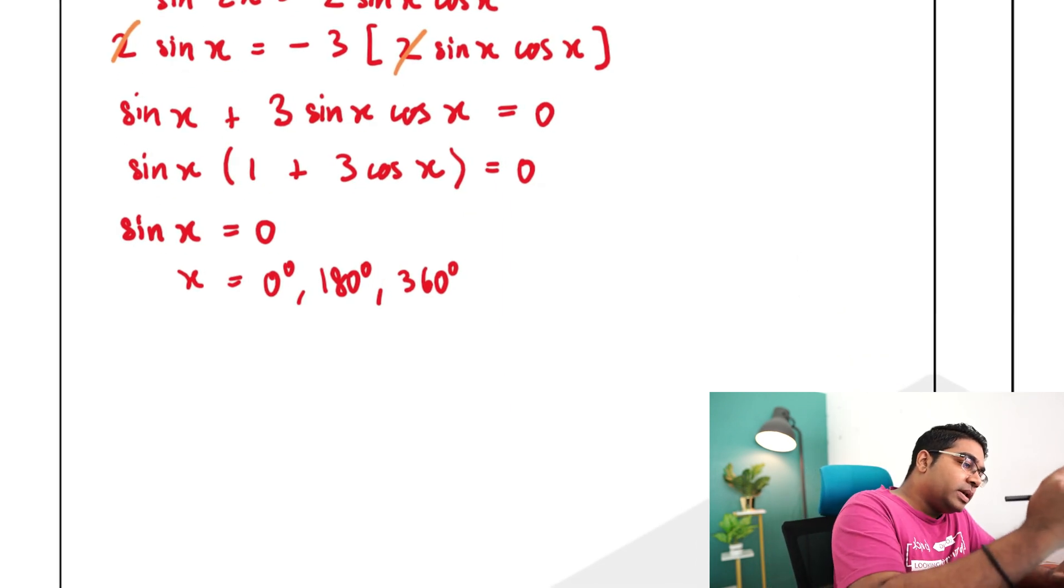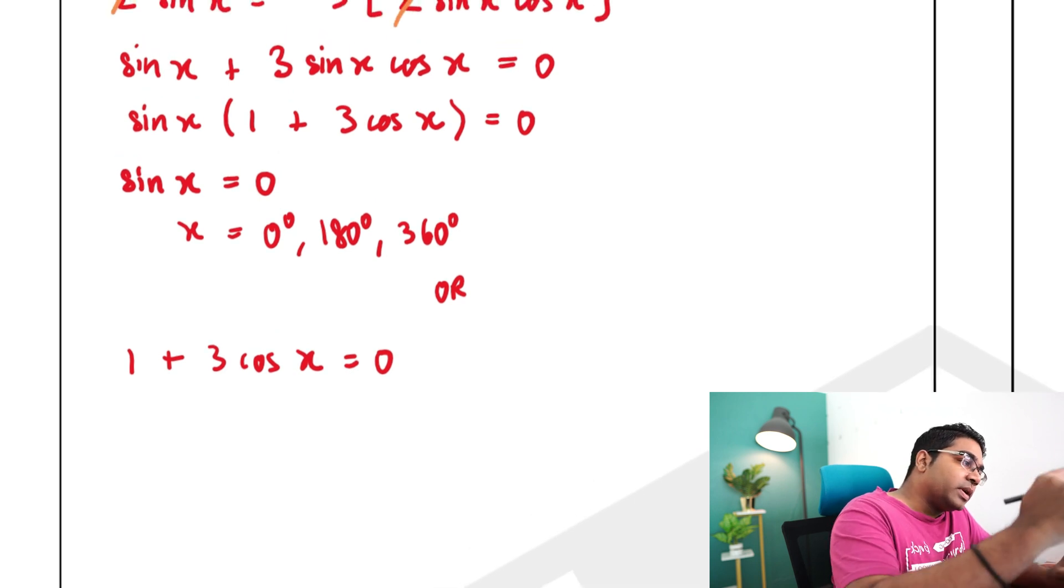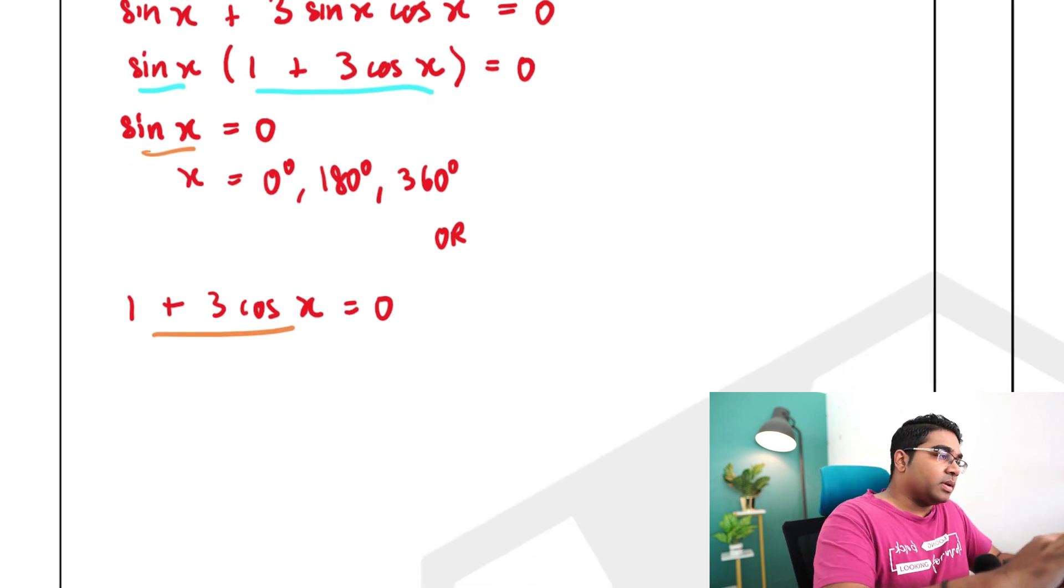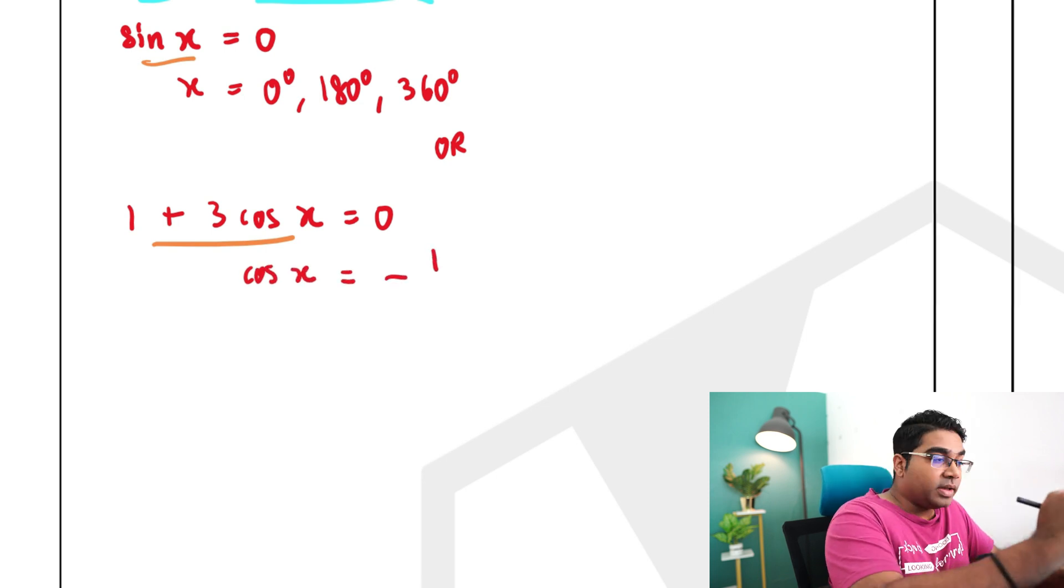So this is the one case or the second case could be 1 plus 3 cosine of x is equals to 0. So this is a standard solution when it comes to factors here. This multiplied by this is equals to 0 which means either this is 0 or this is 0. And now we can work this out. So cosine of x will be equals to negative 1 minus 1 on both sides and then divide by 3 on both sides. Negative 1 over 3.